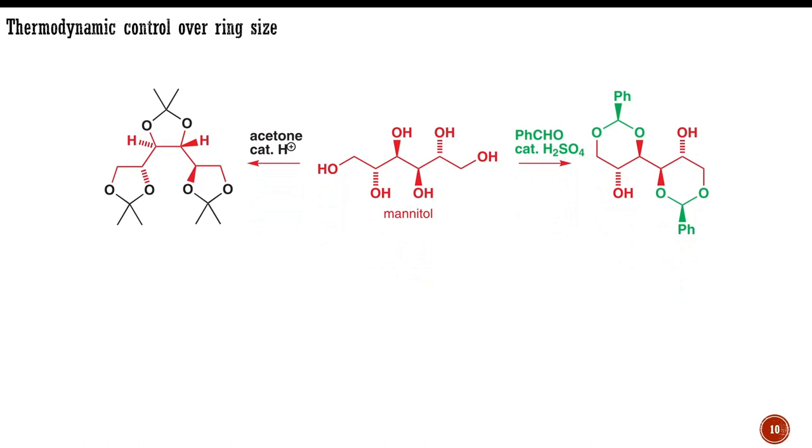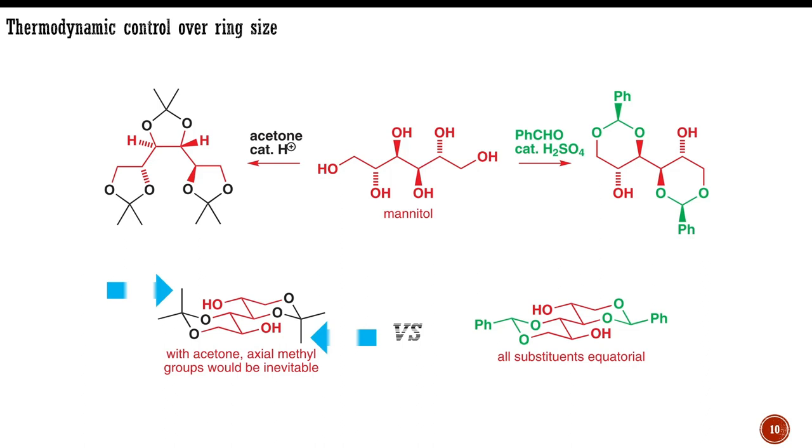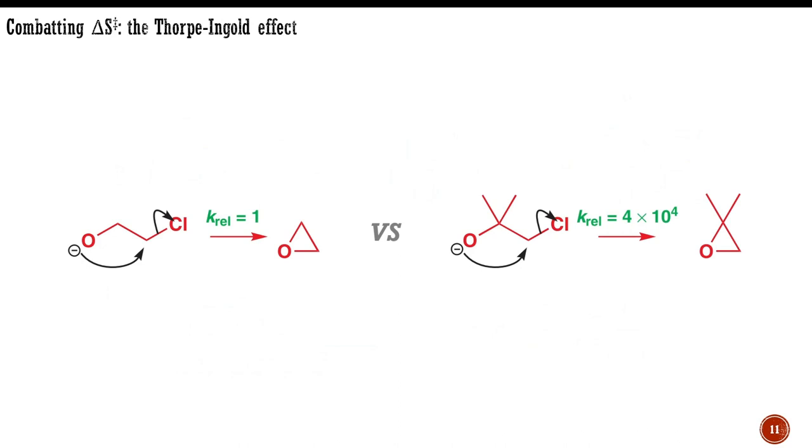Drawing a conformational diagram of the product on the right helps to explain why. All of the substituents are equatorial, making this a particularly stable structure. Now imagine what would happen if acetone formed this type of six-membered ring acetal. There would always be an axial methyl group, and the six-membered rings would be less stable.